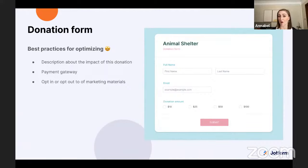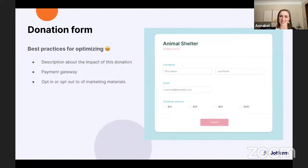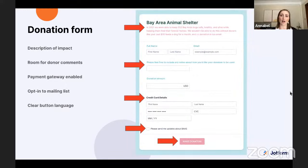The last point for the donation form is the option to opt in or out of marketing materials. Including an opt-in checkbox under the email field gives donors the option to subscribe to your email updates, helping you stay top of mind. You could also include an opt-out checkbox since some individuals might only want to donate. Moving on to the after shot, we have the description of impact, payment gateway enabled, opt-in to mailing list, and clear button language.